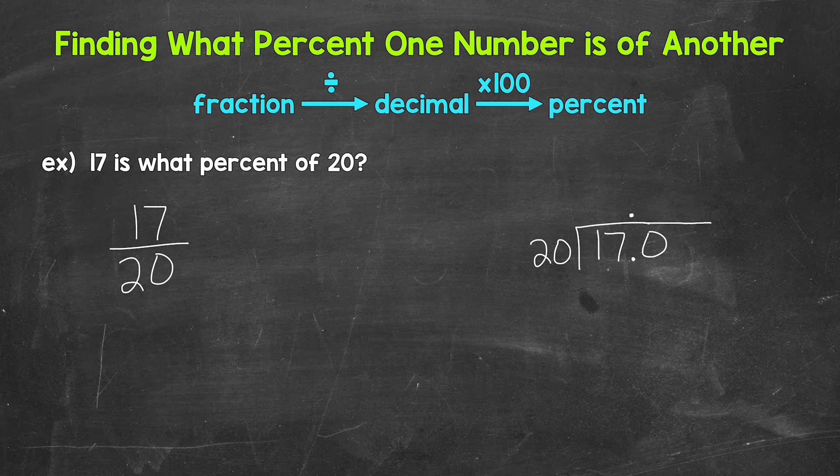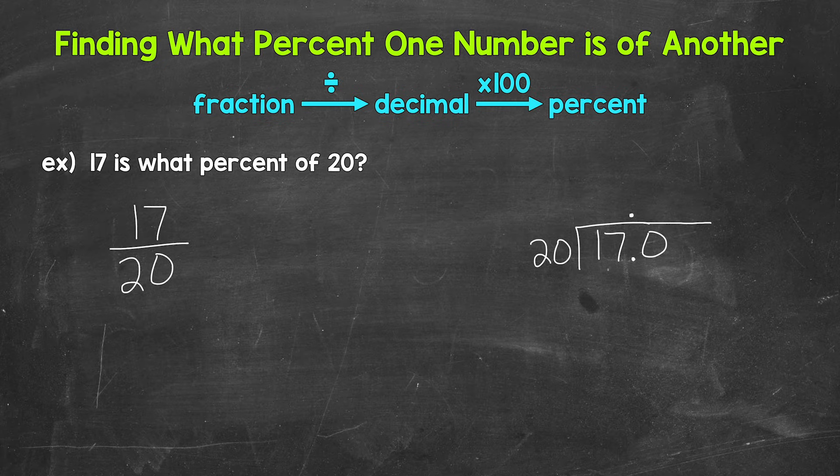And I'm also going to extend the division bar here. Now we can think of this as 170 divided by 20. So how many groups of 20 in 170? How many 20s in 170? Well, 8.